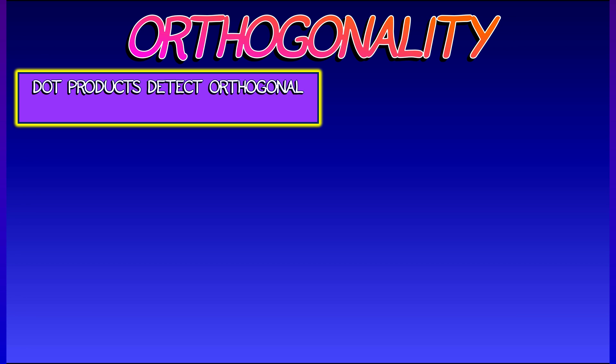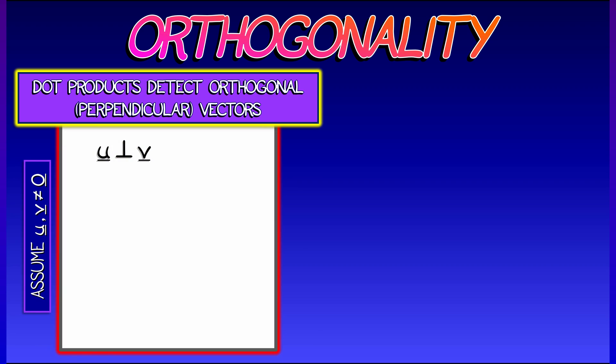But that's not all. Dot products also detect orthogonality in n-dimensional space. So if you have a pair of non-zero vectors, then u and v are perpendicular. That means they have a 90-degree angle between them.